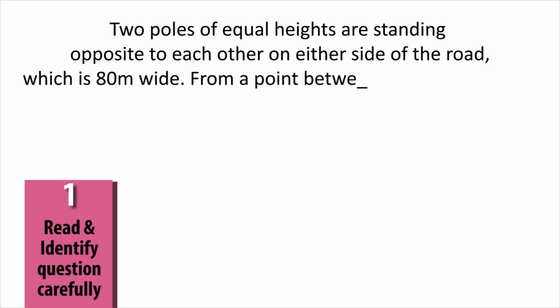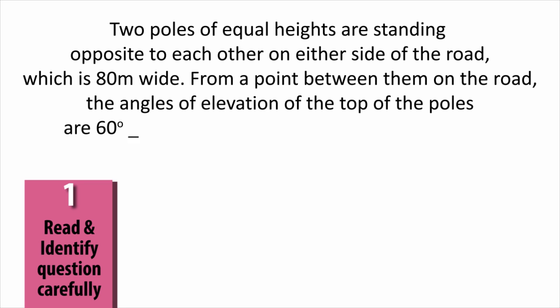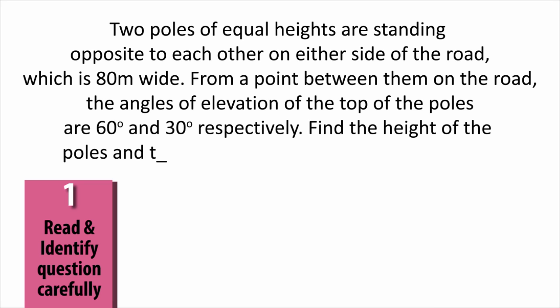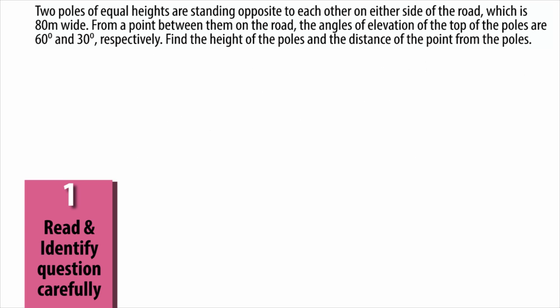From a point between them on the road, the angles of elevation of the top of the poles are 60 degrees and 30 degrees respectively. Find the height of the poles and the distance of the point from the poles.